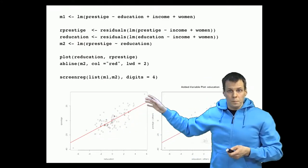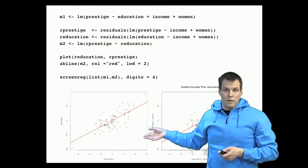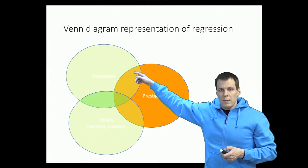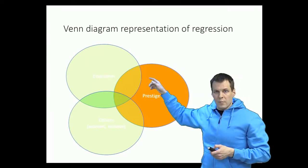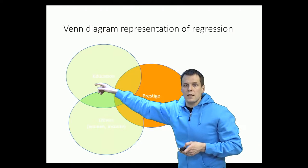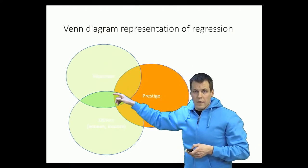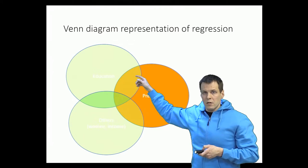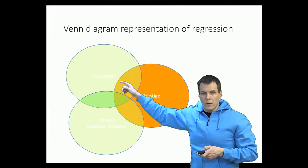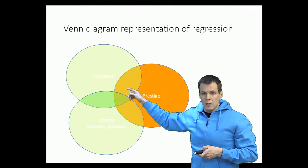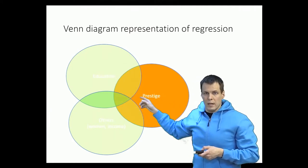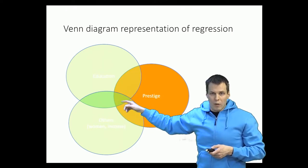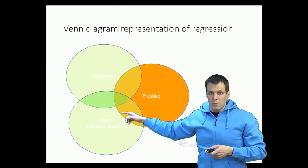We can also consider this from the Venn diagram perspective. In the Venn diagram view of regression analysis, we have the dependent variable — prestige — and the independent variables: education and the other variables. Prestige and education are correlated, and we want to know what part of that overall correlation is unique to education and prestige and not accounted for by the other variables. There is some overlap among all variables, and some unique relationships between them.